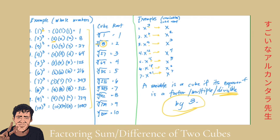Whatever variable or letter you use, it doesn't matter as long as it follows this rule. Earlier I was using the word term — a term is a perfect cube if both the numerical coefficient and the variable or variables are cubes. So that's the concept. We will have examples like that in a few minutes. Let's now continue and use these cubes for the difference of two cubes.